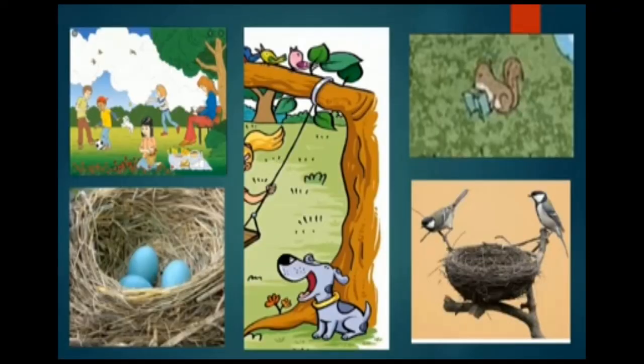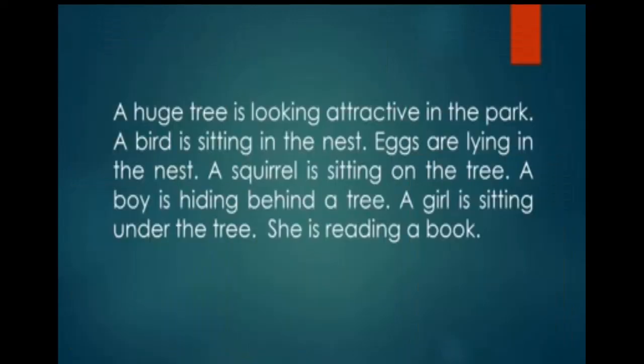Now, students, you can see the next picture. We can see a nest, birds, squirrel, trees, eggs, etc. And the sentences will be as follows. A huge tree is looking attractive in the park. A bird is sitting in the nest. Eggs are lying in the nest. A squirrel is sitting on the tree. A boy is hiding behind a tree. A girl is sitting under the tree. She is reading a book.